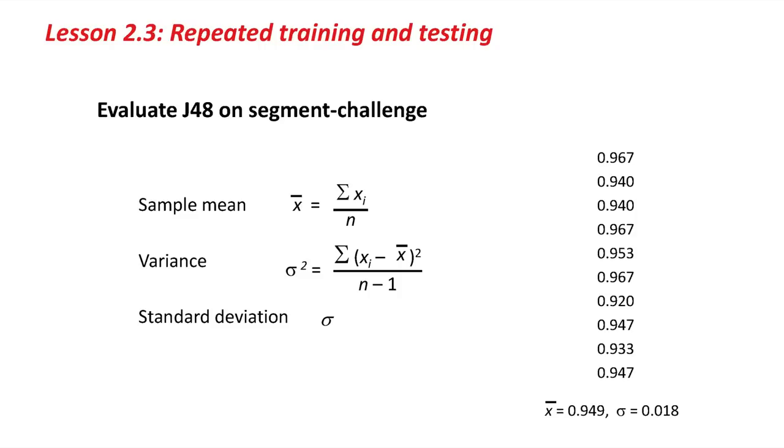Now you can see that the real performance of J48 on the Segment Challenge dataset is approximately 95% accuracy, plus or minus approximately 2%. Anywhere, let's say, between about 93% and 97% accuracy. These figures that you get, that Weka puts out for you, are misleading. You need to be careful how you interpret them, because the result is certainly not 95.3333%. There's a lot of variation on all of these figures.